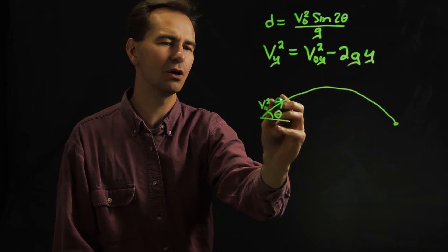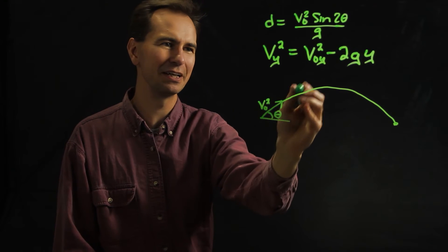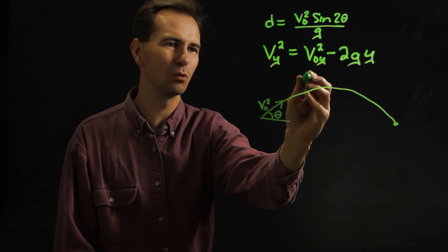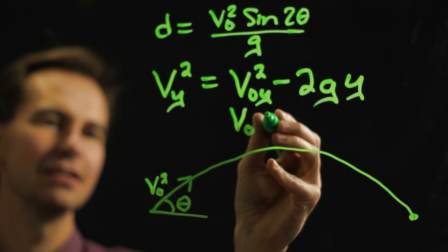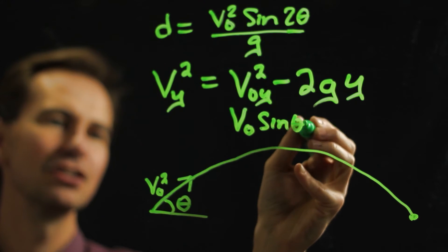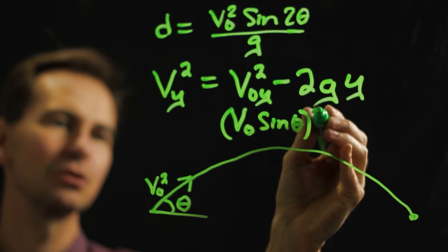And if we know the overall velocity at the beginning, then the velocity in the y direction would be the overall velocity times the sine of theta. So we would have that whole thing squared.